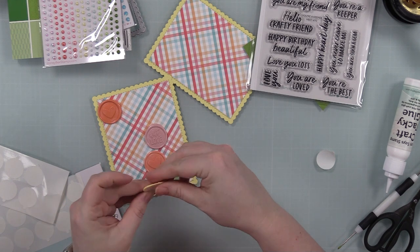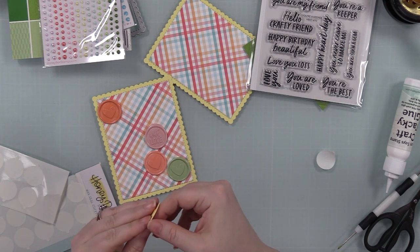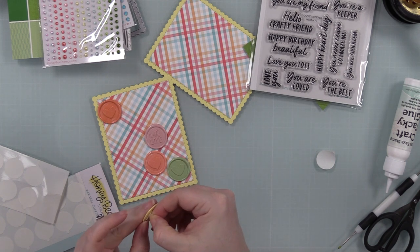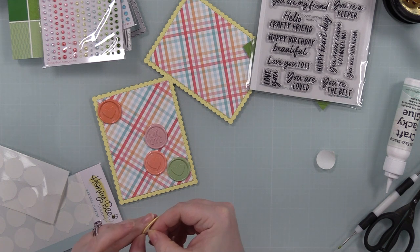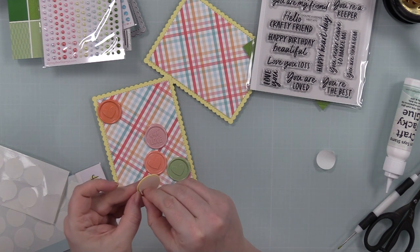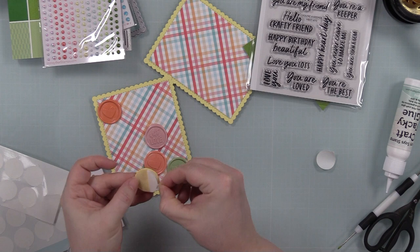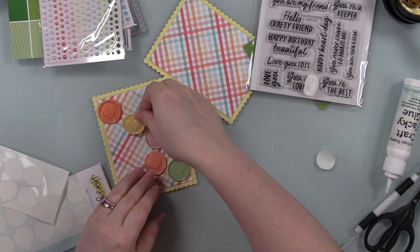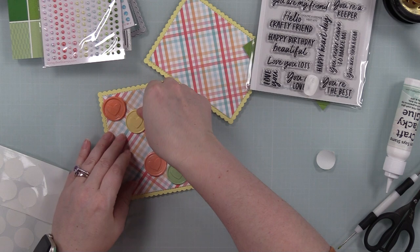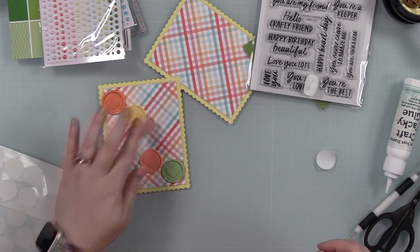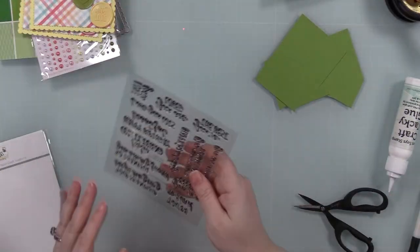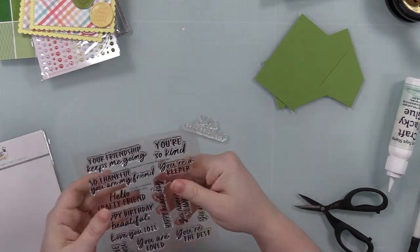If you get really comfortable with wax seals, you can pour directly onto your card, your project, your envelope, whatever. I've done it a couple times. It just depends on whether or not I'm in the mood because it's a little more risky, a little more nerve-wracking. Hence me using like the silicone mat. It's just you don't got to worry about it and then you can just use these to adhere them.